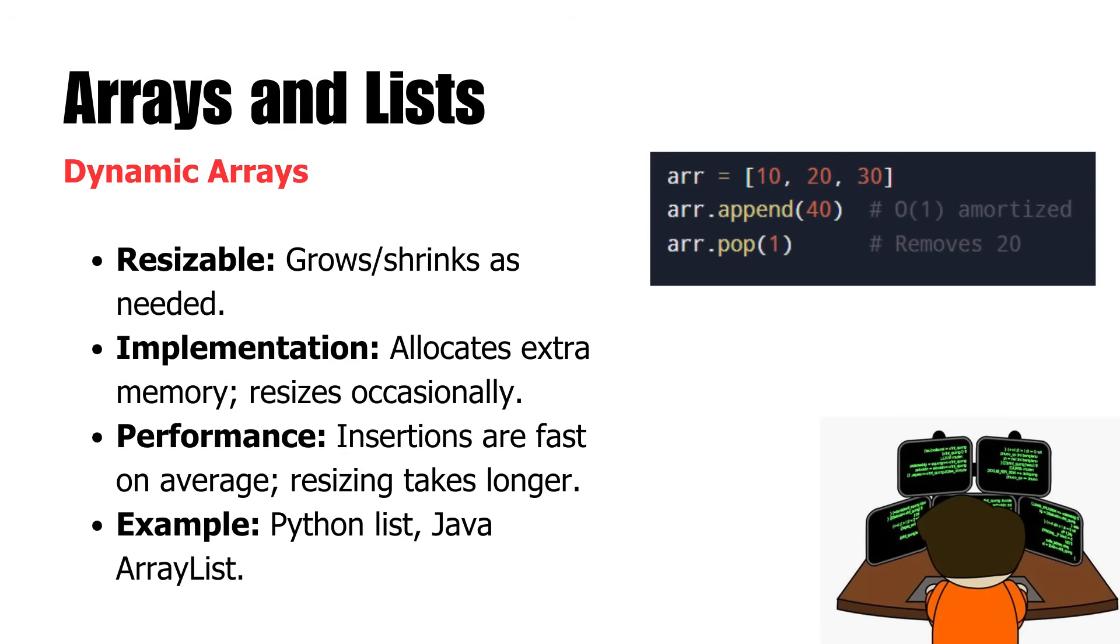Now, dynamic arrays extend this by allowing the size to be dynamically changed so that it grows or shrinks as needed. These structures automatically extend by allocating more memory when needed. Adding new elements is usually very fast, except in unusual circumstances where the entire array must be resized, which is slower. Even though this resizing happens infrequently, the average time to add elements remains minimal.